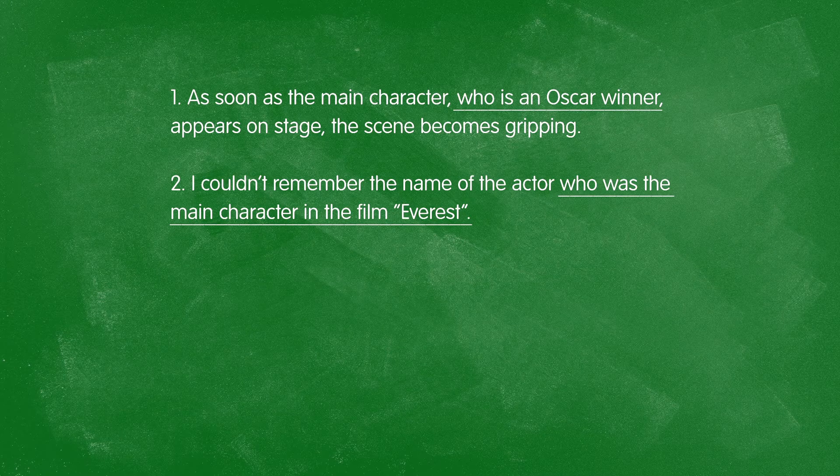Sometimes relative clauses are separated from the rest of a sentence by commas. In this case, the relative clause is providing additional information which is unnecessary to understand the sentence properly — things that are nice to know or may help the listener, but are not necessary. Let's look at some examples of this.